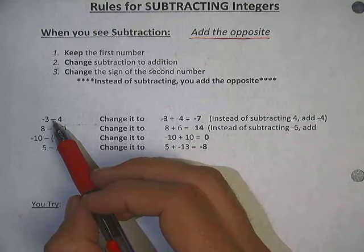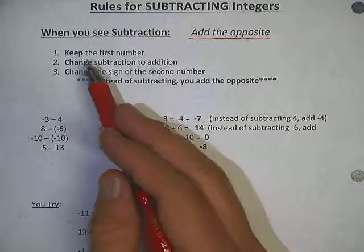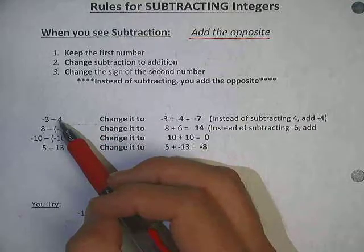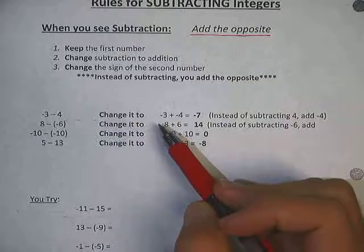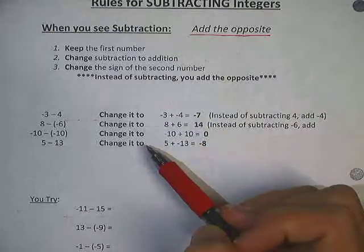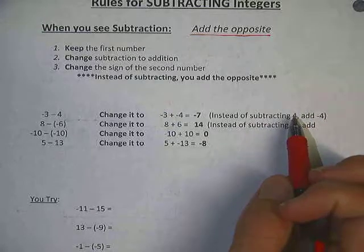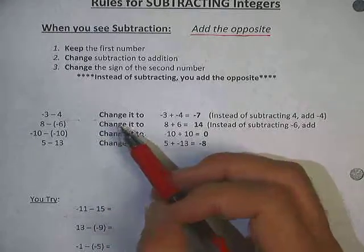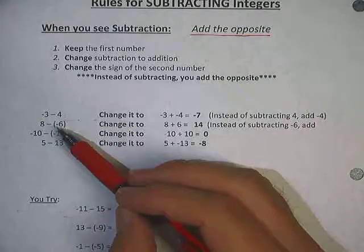For example: negative 3 minus 4. I don't want to do subtraction with a negative, so I'm going to change this to addition. But if that's all I do, I get a different answer. So I have to add the opposite. Keep the first number — negative 3. Change subtraction to addition. Change the second number: positive 4 becomes negative 4. So it becomes negative 3 plus negative 4. Negatives plus negatives give more negatives. So instead of subtracting 4, I'm adding negative 4 — they do the same thing.